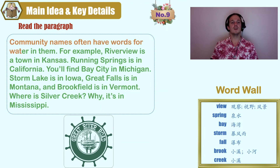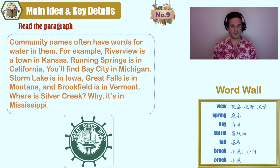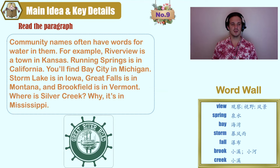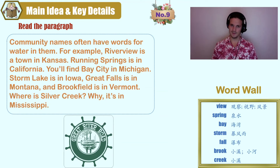Community names often have words for water in them. For example, Riverview is a town in Kansas. Running Springs is in California. You'll find Bay City in Michigan. Storm Lake is in Iowa. Great Falls is in Montana, and Brookfield is in Vermont. Where is Silver Creek? It's in Mississippi.